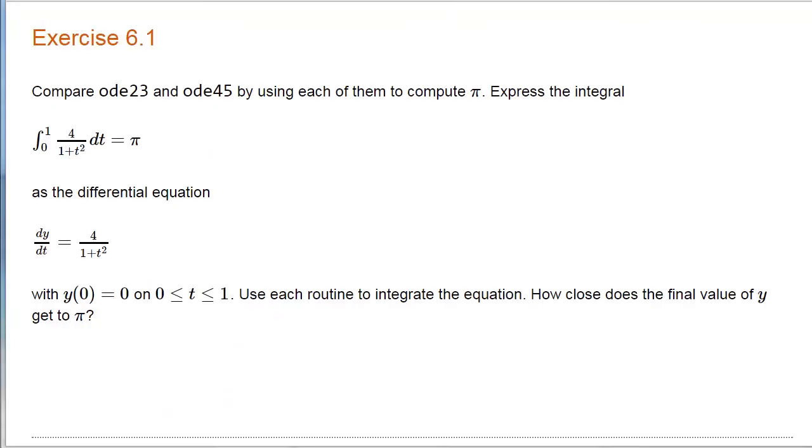Here's an exercise. Compare ODE23 and ODE45 by using each of them to compute pi. The integral 4 over 1 plus t squared from 0 to 1 is pi. You can express that as a differential equation. Use each of the routines to integrate that differential equation and see how close they get to computing pi.